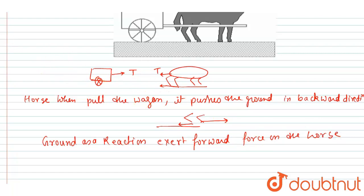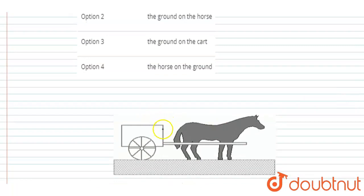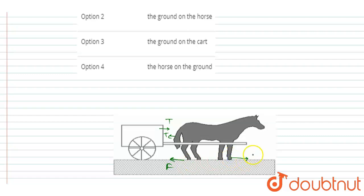Now you can see the diagram again. The wagon is being pulled, and the same force T is applied on the horse in the backward direction. The horse is applying a force in the backward direction on the ground — let's call it F — and the horse is acted on by a forward direction force F from the ground.